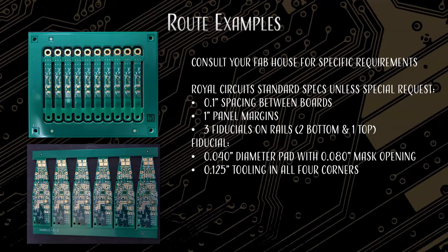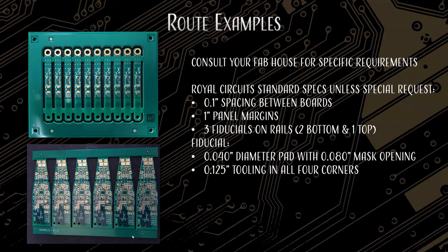We've got a couple of examples here. On the top left, this is an example of mouse bites — it's got those tiny little holes on each side, and each one of those little rectangular bars is going to be able to break out. These are pretty tight together, so I'm guessing this is a thin board where it would still pop out fairly easily. And on the bottom side, it looks like we have a V-score along the top and bottom — a V-score and route example — and it's been routed out for the most part, held together with top and bottom rails through the V-score method.